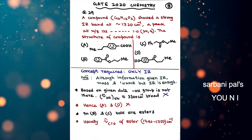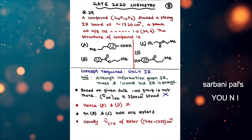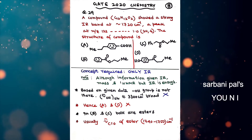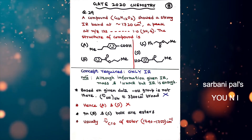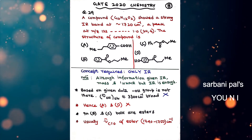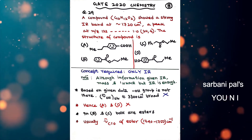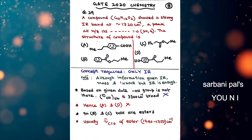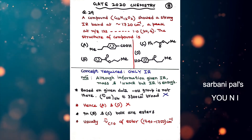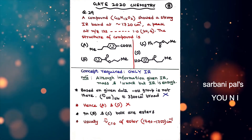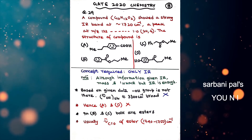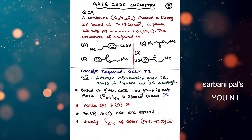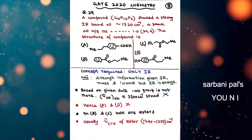Now, GATE 2020 chemistry question number 29. A compound of formula C₁₀H₁₂O₂ showed a strong IR band at approximately 1720 cm⁻¹. The mass spectrum shows a peak at m/z 122, and HNMR information is also provided. Four structures A, B, C, D are given. To identify the correct answer, only IR knowledge is sufficient — no need to apply the mass or HNMR data.